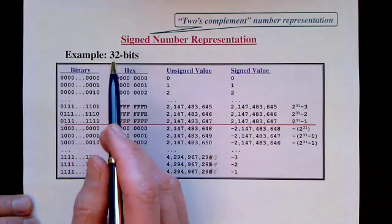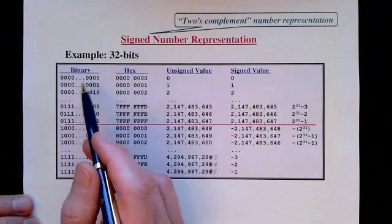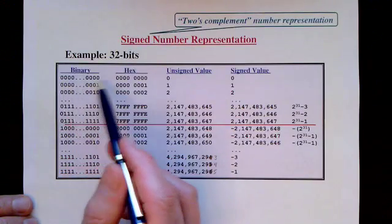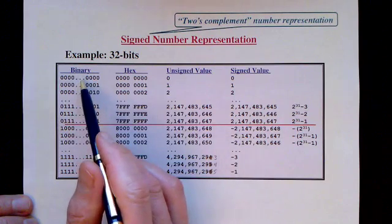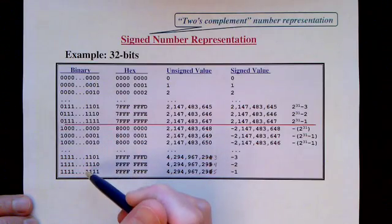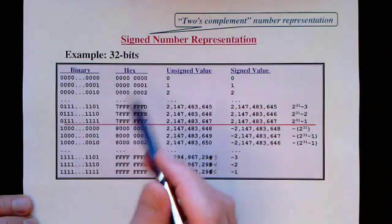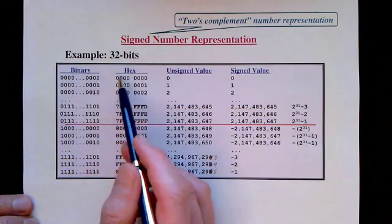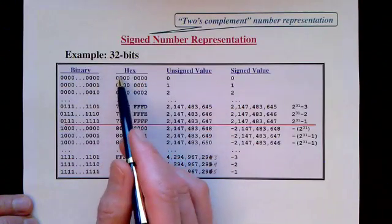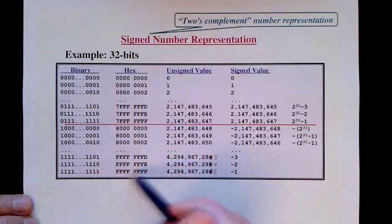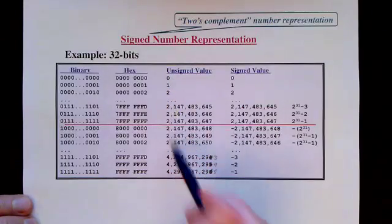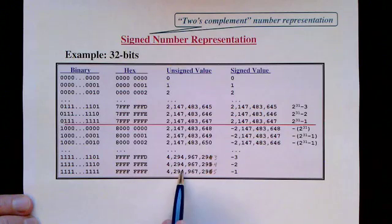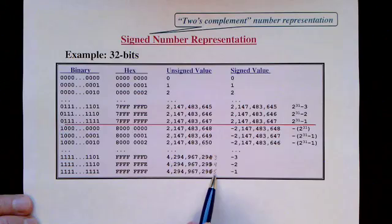Let's look at what we can do with a word of 32 bits. This table lists all possible values of 32 bits, starting with 32 zeros all the way to 32 ones, with rows omitted in the middle. The bit pattern is shown in binary and in hex, starting at 00000000 and going up to FFFFFFFF. Interpreted as unsigned numbers, the range goes from 0 all the way up to 4,294,967,295.